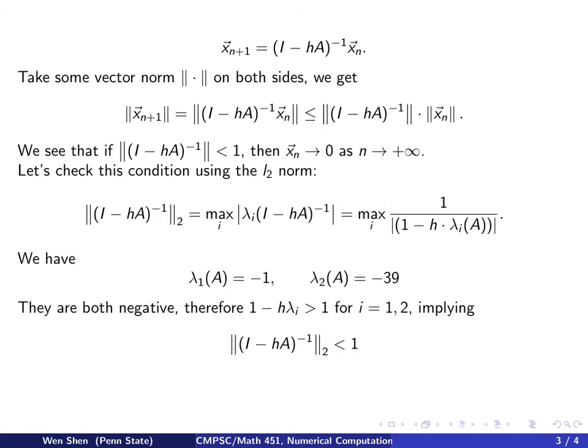And then let's look at the two eigenvalues of A. One is negative 1, and the other is negative 39. Both of them are negative. So this quantity here, 1 minus something negative, would be actually 1 plus a positive thing, so it will be strictly bigger than 1 on the denominator, which makes the whole expression strictly less than 1.